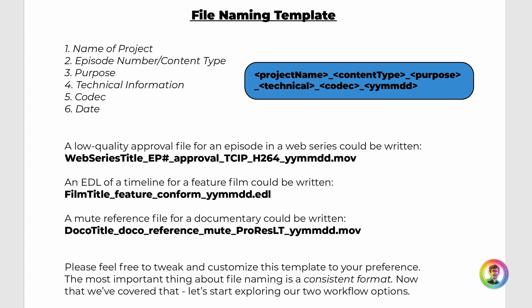Second to last is the codec — very, very important. The file container is specified by the end of the file name, in this case .mov, but within a QuickTime there can be numerous codecs being used. And a date on the end, fairly self-explanatory. The other two rules to keep in mind are to avoid special characters and to avoid spaces, so you can see that I always use underscores in my file names.